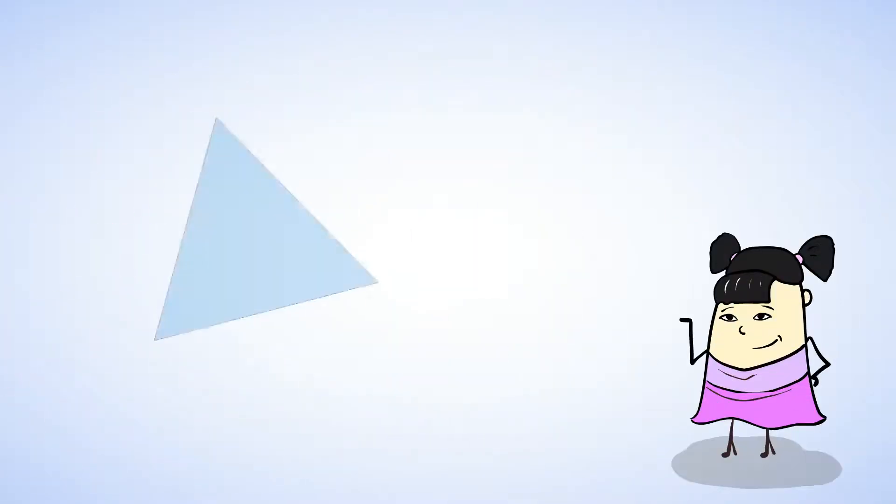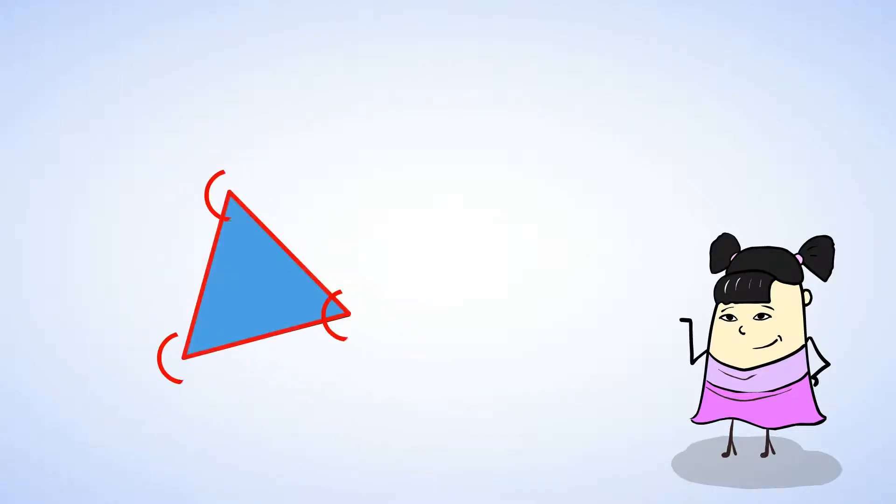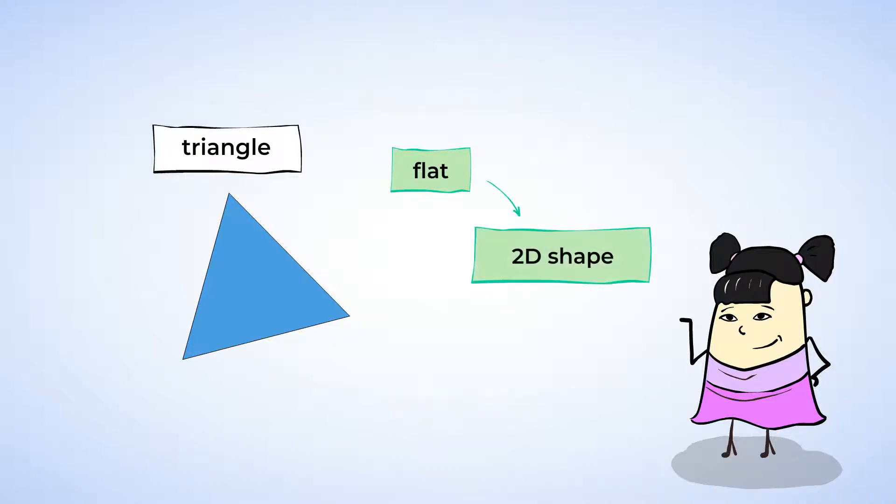Let's look at the first one. Okay. It has sides and corners. And we can see the whole shape. Well, this is definitely a flat shape. In fact, it's a triangle. A triangle is a 2D flat shape. Awesome.